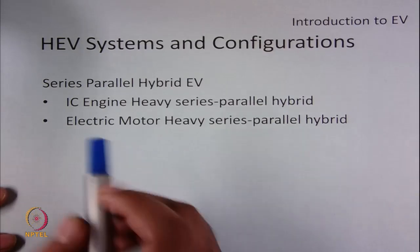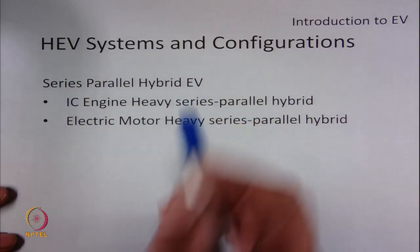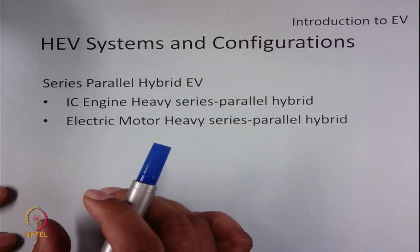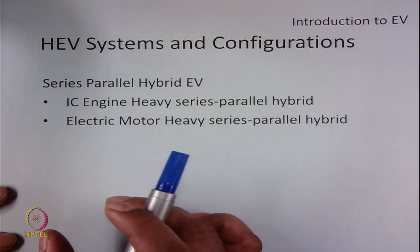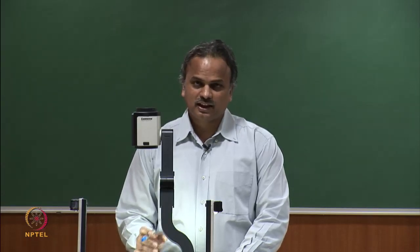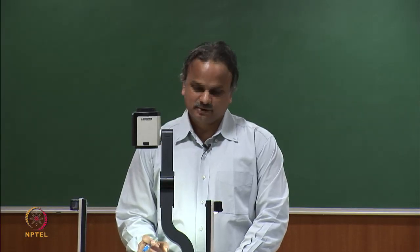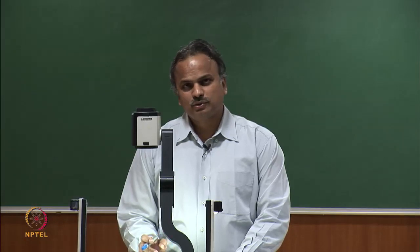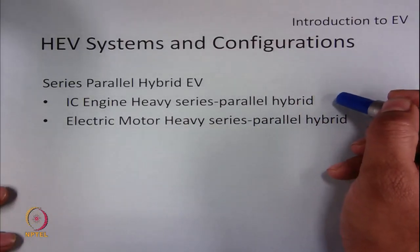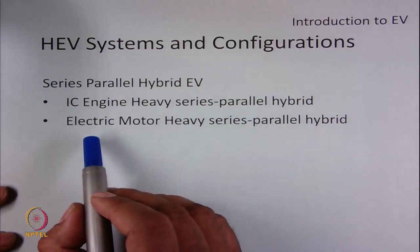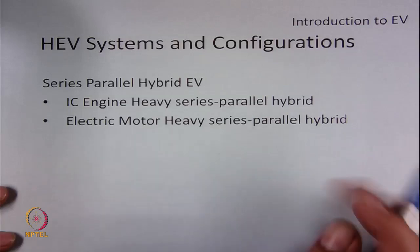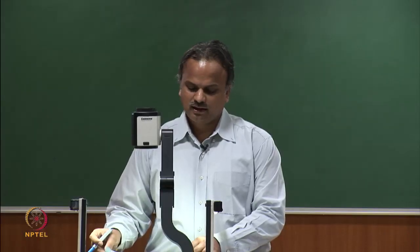There is a complex series-parallel HEV where both the series and parallel configurations are combined so that the advantages of both can be obtained together. The system is complex but offers many advantages and various modes of operation. Depending on whether the IC engine is more active or the electrical motor is more active, there are two types: engine-heavy series-parallel HEV and electrical motor-heavy series-parallel HEV.